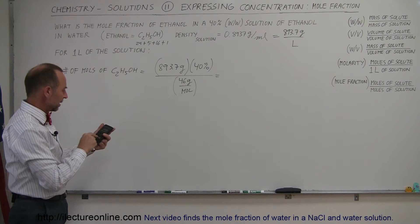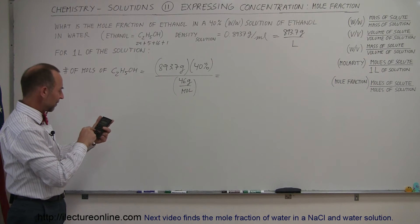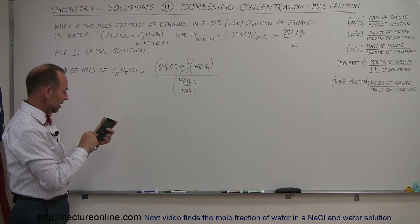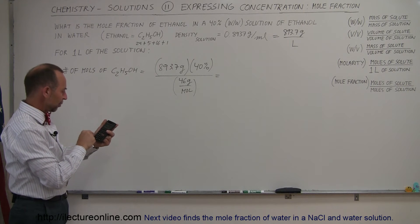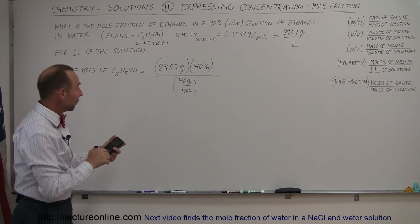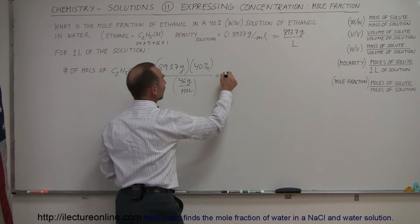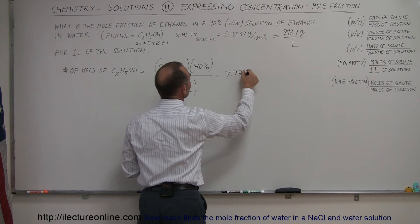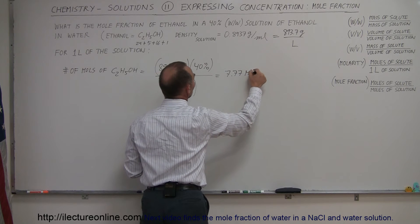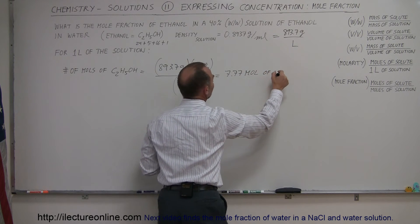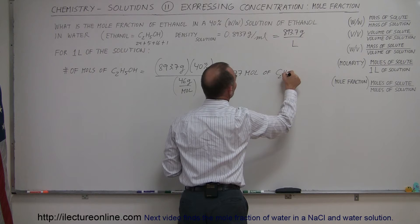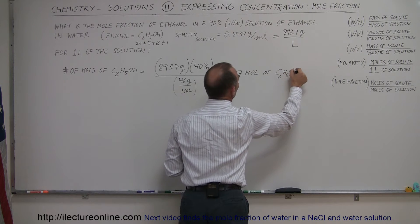Let's take the numbers: 893.7 times 0.4 divided by 46 equals 7.77 moles of ethanol, C2H5OH.